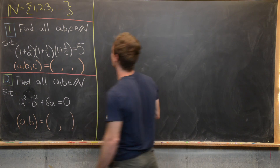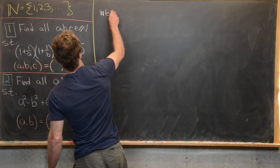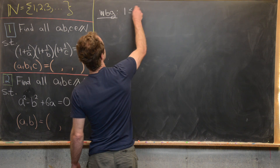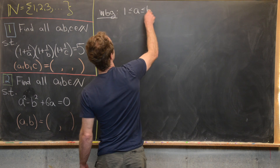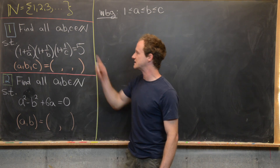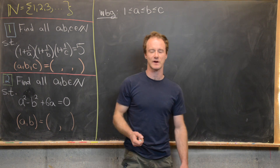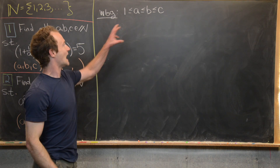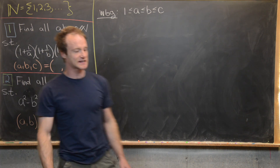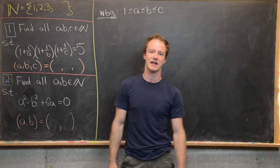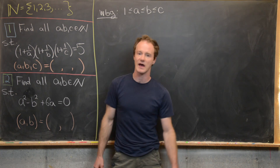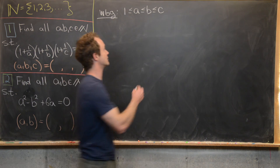We're going to start by making an assumption that doesn't ruin our generality. Without loss of generality, we assume 1 ≤ a ≤ b ≤ c. We can do that because there's some symmetry in this equation — notice that a, b, and c are really playing the same role. Now we want to take this inequality and turn it into something that looks like the product pieces on the left-hand side, one plus one over a and so on.